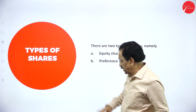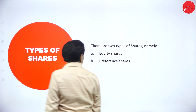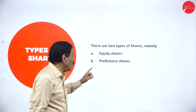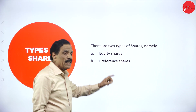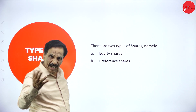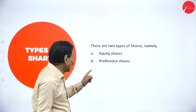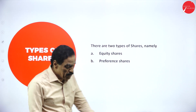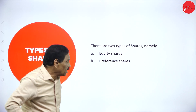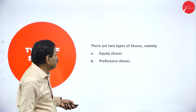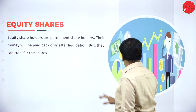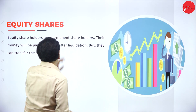There are two types of shares. One is equity share, also called ordinary share, and the other is preference share. We are going to explain what equity shares and preference shares are.